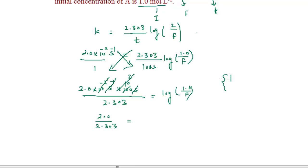On the right side, you might have learned the expression log(a/b) can be written as log(a) - log(b). We apply the same concept here. As a result, we get log 1.0 minus log final amount.